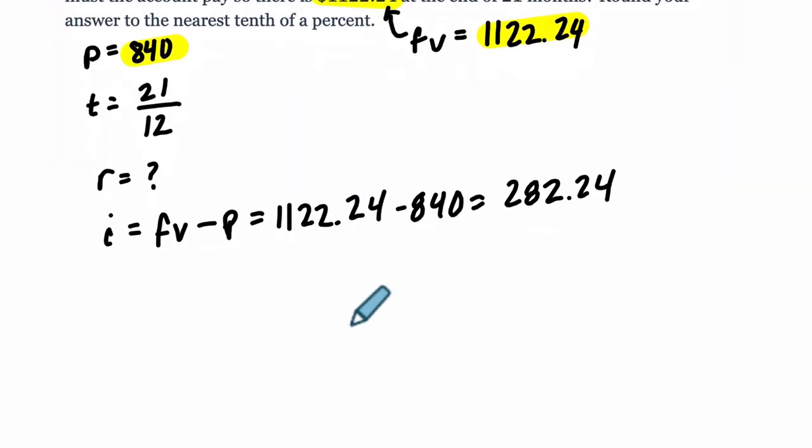What rate would get us there, right? So we know that the simple interest is the principal times the rate times the time. But we want to get the rate. That's what we're trying to find here. That's our missing information. So let's get rid of this P and the T.